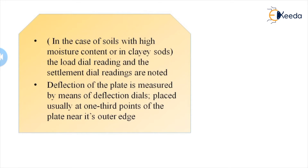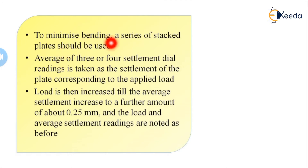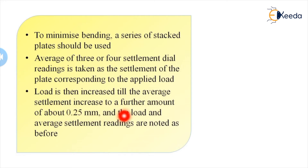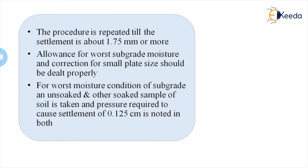A seating load equivalent to a pressure of 0.07 kg/cm² (320 kg on a 75 cm diameter plate) is applied and released. The settlement dial gauge is set to zero. Load is then applied by jack to cause an average settlement of about 0.25 cm. When no perceptible increase in settlement occurs or the settlement rate is less than 0.025 mm per minute, the load and settlement dial readings are noted, and a load-settlement graph is plotted.